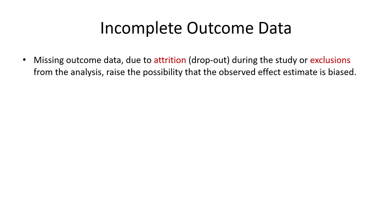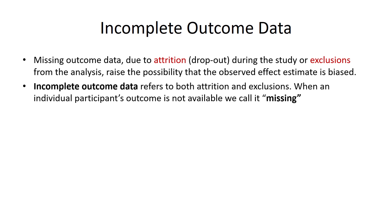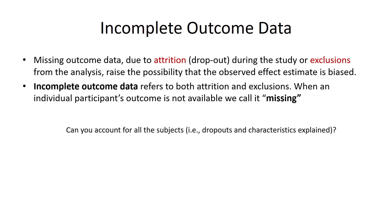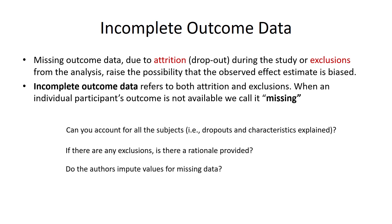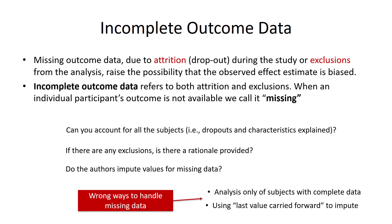Then there's incomplete outcome data. Missing outcome data due to attrition or dropout during the study, or exclusions from the analysis, raise the possibility that observed effect estimates could be biased. Incomplete outcome data refers to both attrition and exclusion, and when an individual patient outcome is not available, we call it missing. What you really want to be able to answer is: can you account for all of the subjects and all of the measurements on those subjects? If there are any exclusions, is a rationale provided? Do the authors impute values for missing data? Analysis of only subjects with completed data is known to bias the outcomes. Using last value carried forward to impute has also been demonstrated to have a lot of problems and to bias the results.